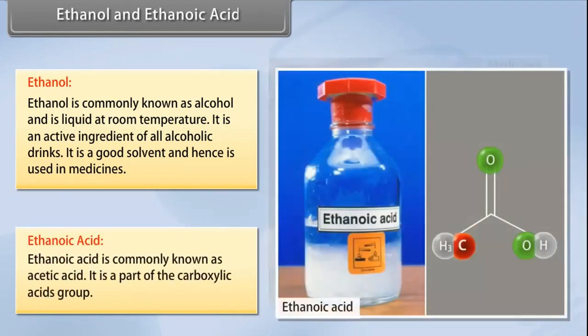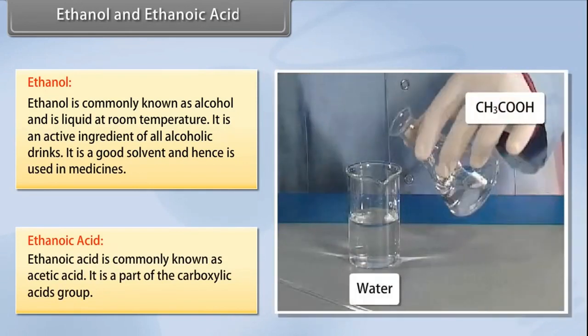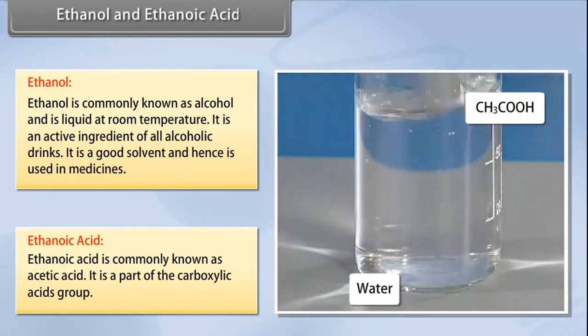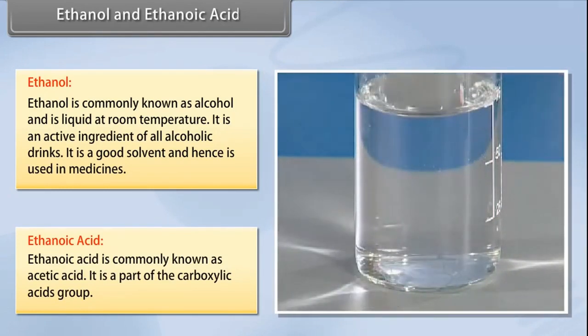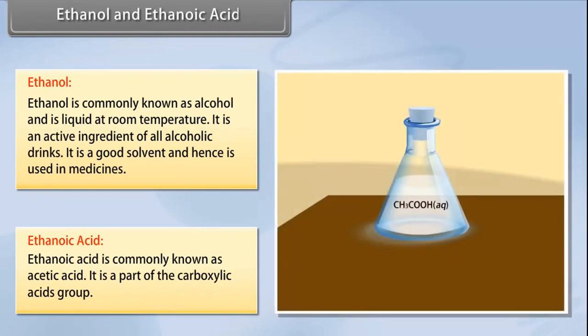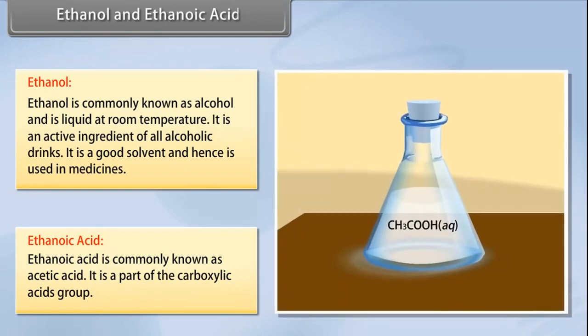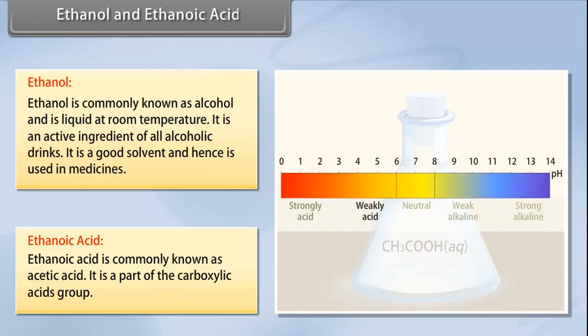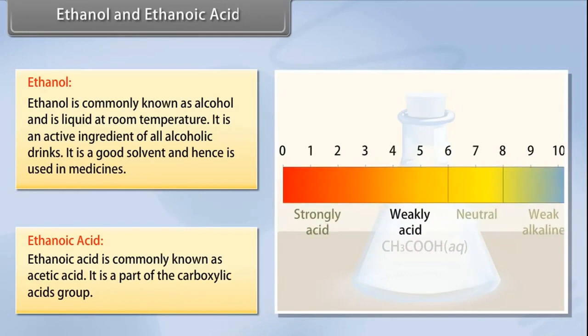Ethanoic acid: Ethanoic acid is commonly known as acetic acid. It is a part of the carboxylic acid group. When a 5-8% solution of acetic acid is mixed in water, it forms a substance called vinegar. The melting point of pure ethanoic acid is 290 Kelvin. Because of this property, it freezes during winter and hence is also known as glacial acetic acid. Carboxylic acids are characterized by a special acidity. However, as carboxylic acids are not ionized, they are weak acids.